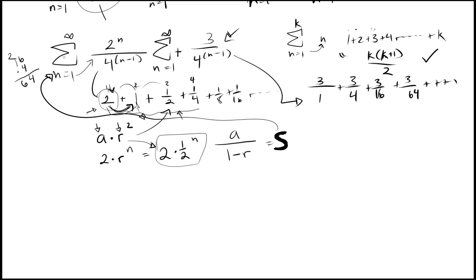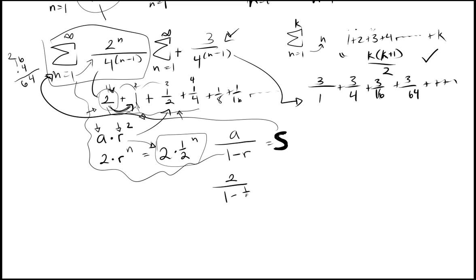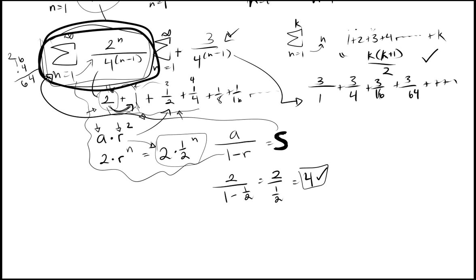So we just plug in: a over 1 minus r is 2 over 1 minus 1/2, which is 2 over 1/2, which is 2 times 2, which is 4. So all of this first part — when n goes to infinity — actually just equals 4.